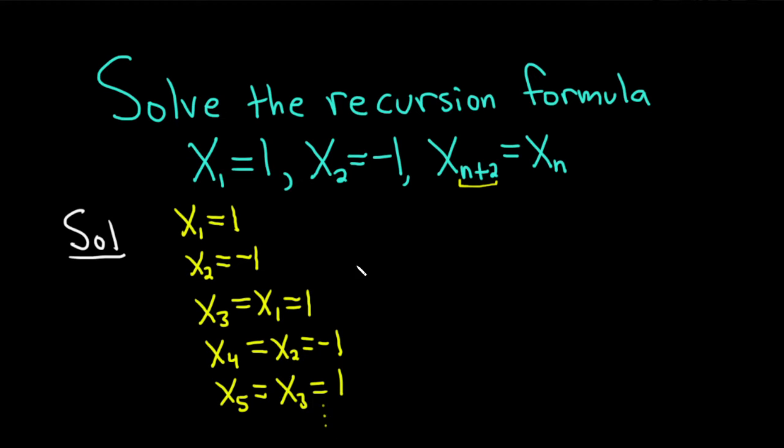So at this point, I think it's pretty clear that we have a pattern. The pattern is of the form 1, negative 1, 1, negative 1, etc. It just repeats. So now we need to come up with a formula for this alternating sequence of 1s and negative 1s.